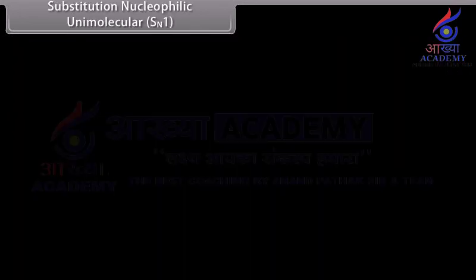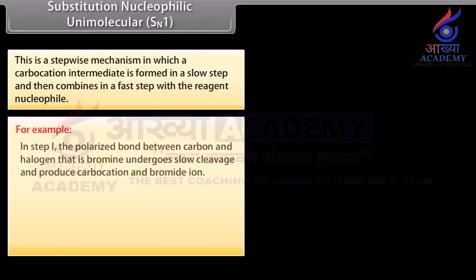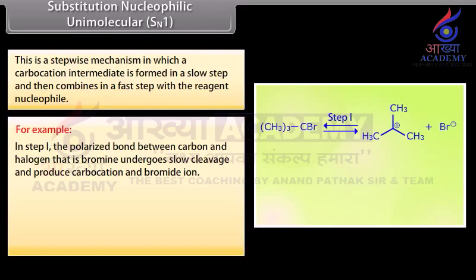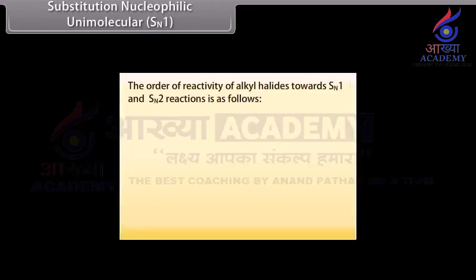Substitution nucleophilic unimolecular, SN1: this is a stepwise mechanism in which a carbocation intermediate is formed in a slow step and then combines in a fast step with a reagent nucleophile. In the first step, the polarized bond between carbon and halogen, that is, bromine, undergoes slow cleavage and produces a carbocation and bromide ion. In the second step, the nucleophile attacks on the produced carbocation and completes the substitution reaction. The reaction follows first order kinetics.